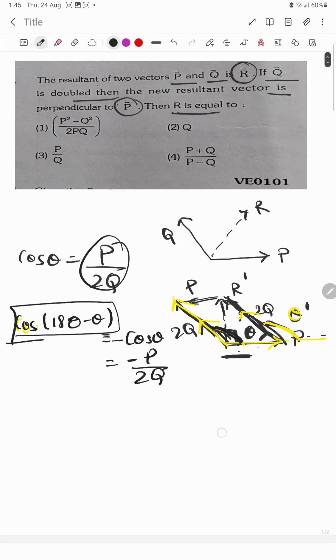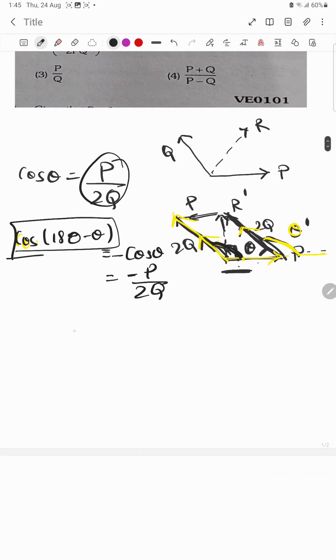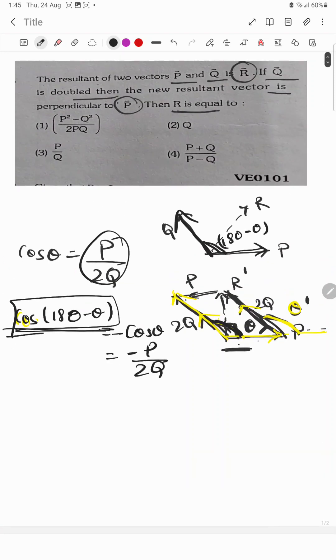Now we have to find R. We know the value of cos(180 - theta), and this will be the same 180 minus theta as the angle between both vectors remains the same from the question.